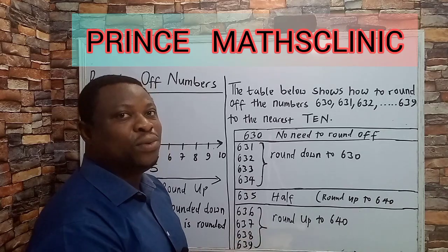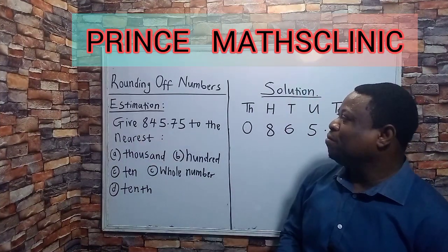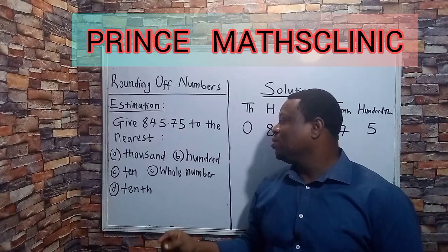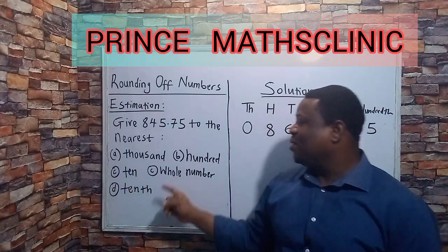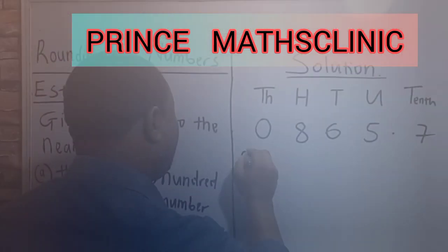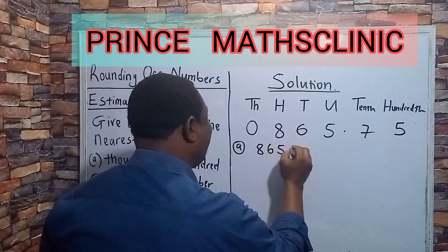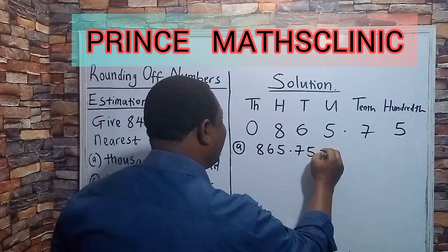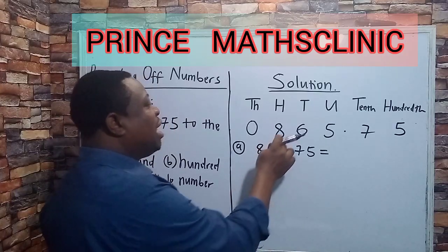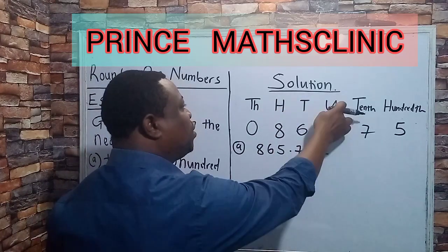We are going to see other examples as we proceed in this lesson. We are given 865.75 and asked to round it to the nearest thousand, hundred, ten, whole number, and tenth. Now, looking at the number 865.75: the 8 is under hundreds, the 6 is under tens, the 5 is under units.